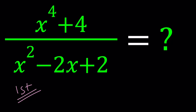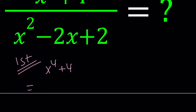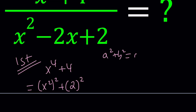How do you factor x to the fourth plus 4? You're going to write it as x squared squared plus 2 squared. If you have a sum of two squares, remember the modulus of a complex number: A plus B i and A minus B i. That is the absolute value of Z squared — this is Z, this is Z bar, and so on. Anyways, that's a different story.